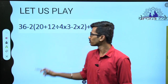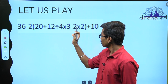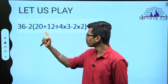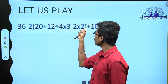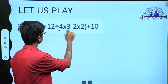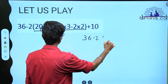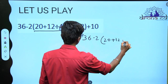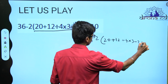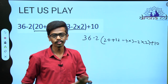We will take one sum: 36 minus 2 into, open bracket, 20 plus 12 divided by 4 into 3 minus 2 into 2, close bracket, plus 10. What is the first thing in BODMAS? Brackets. So first you do brackets — solve what is inside the brackets first. Such a long sum but the numbers are very small, so it is very easy to solve.